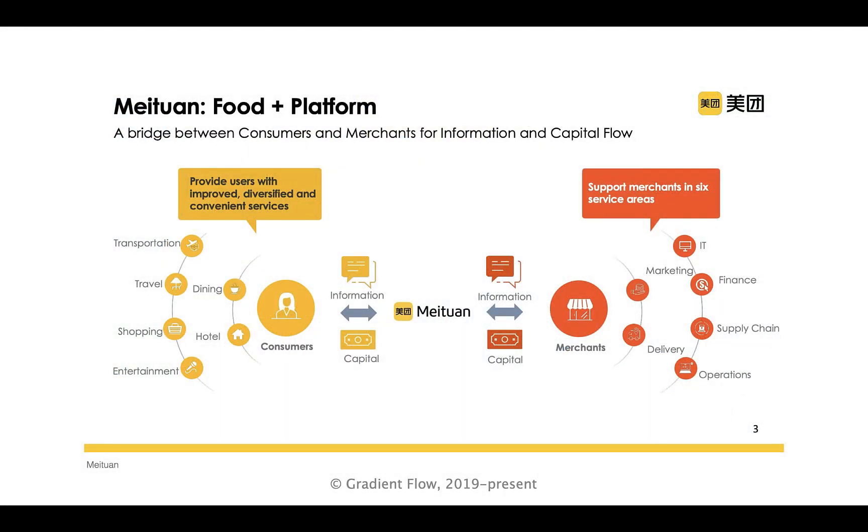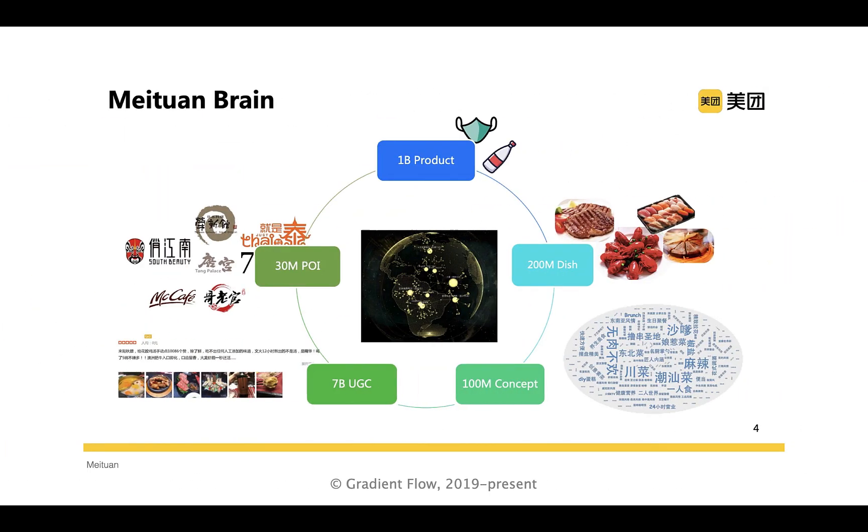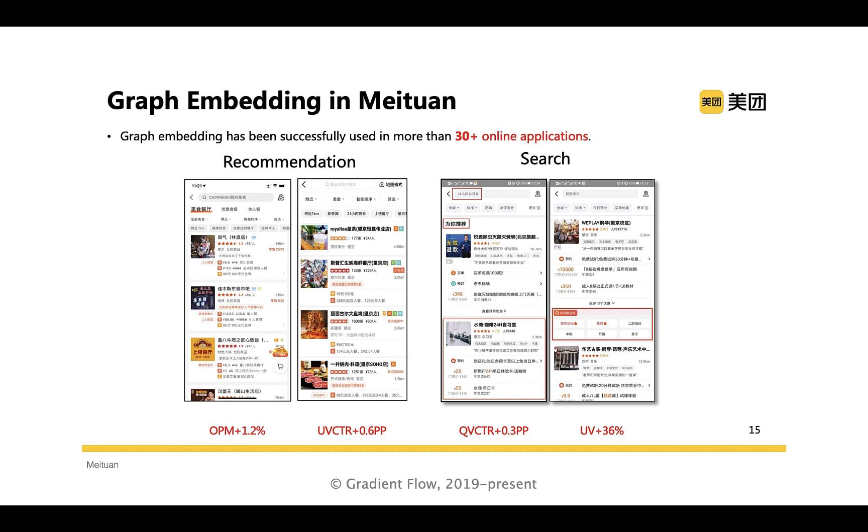In a recent presentation, Chinese e-commerce giant Meituan noted that none of their 30 GNN deployments across many departments use a graph database. Instead, they are using graph embedding.